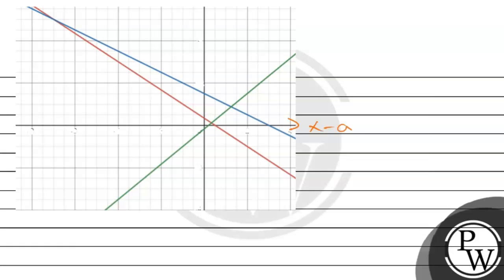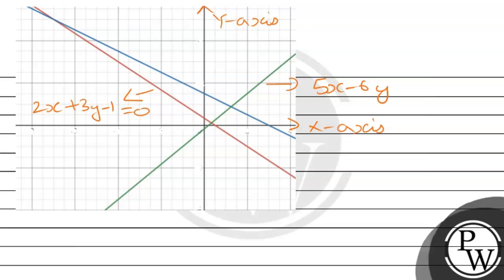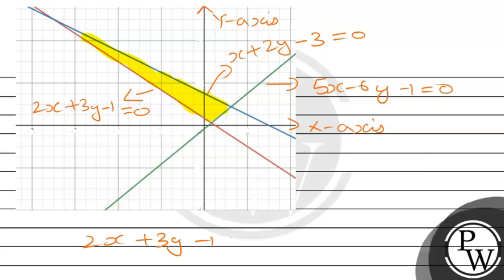Now, these are our three lines: 2x plus 3y minus 1 is equal to 0, 5x minus 6y minus 1 is equal to 0, and x plus 2y minus 3 is equal to 0. We need to check where the point alpha comma alpha square lies. For the first line, the region of 2x plus 3y minus 1 greater than 0 — we put x and y equal to 0, getting minus 1 greater than 0.